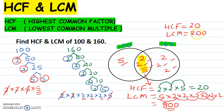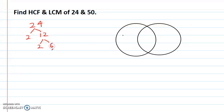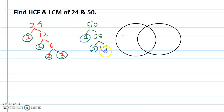Next question: find the LCM of 24 and 50. Let us write down the prime factors of 24. It will be 2 and 12, then 2 and 6, then 2 and 3. Now let us do the prime factors of 50: it is 2 and 25, then 5 and 5. So these are prime factors for 50.